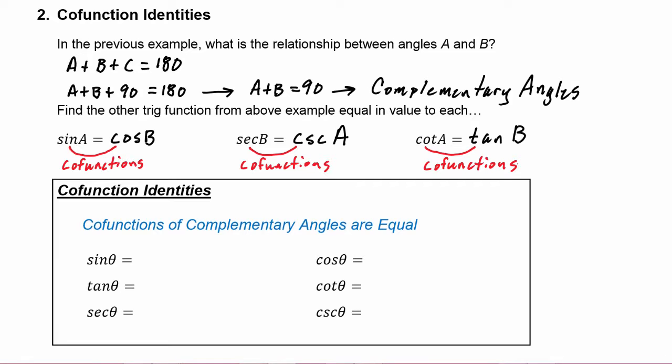Any trig function has a co-function — you just put 'co' in front of it. For example, sine's co-function is cosine. Secant's co-function is cosecant. Tangent's co-function is cotangent.